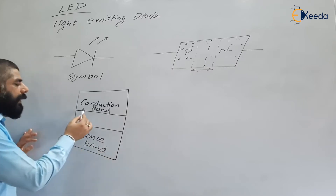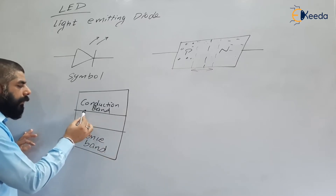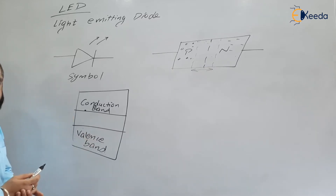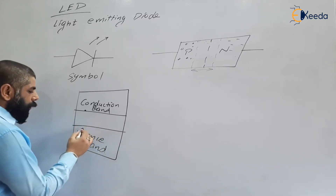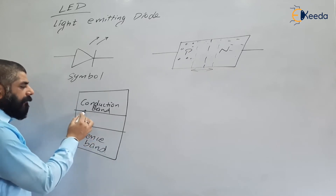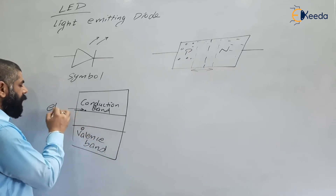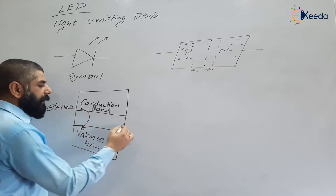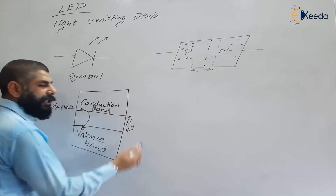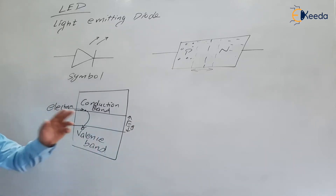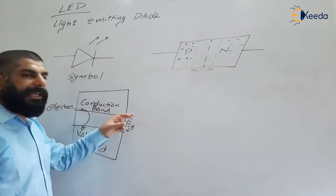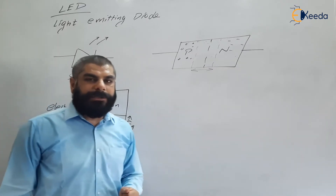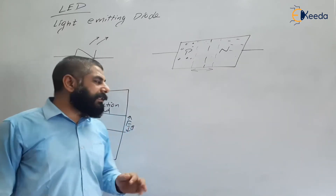When an electron jumps from the conduction band to the valence band, it emits a certain amount of energy. The energy released is equal to the energy gap. In a normal PN diode — for example, a silicon or germanium PN diode — this energy gap is about 1.1 electron volt.